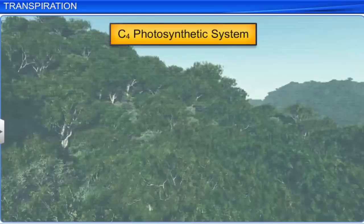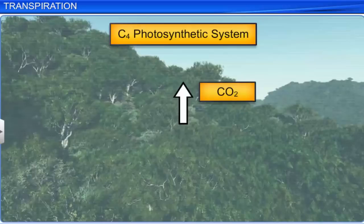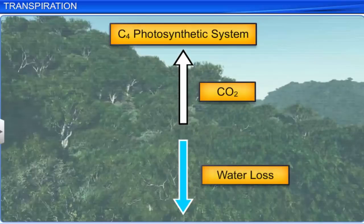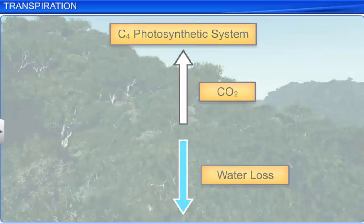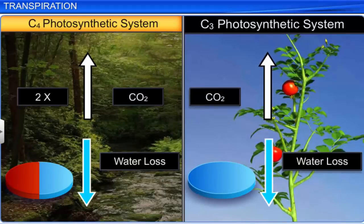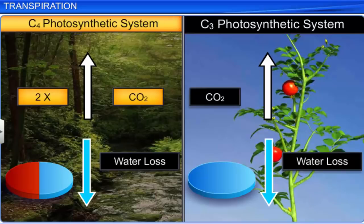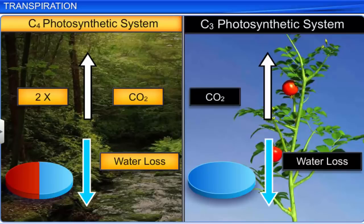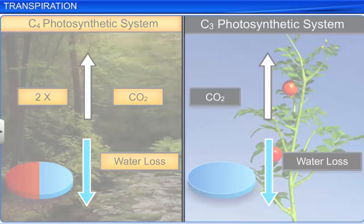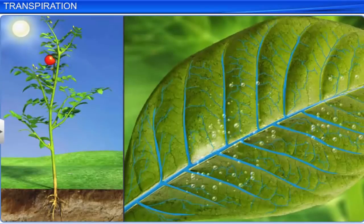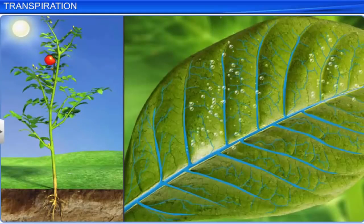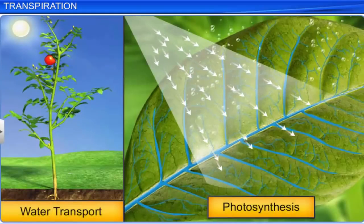The plant C4 photosynthetic system solves this by increasing the availability of carbon dioxide and decreasing water loss. This system is more efficient than the C3 system, since it not only fixes carbon twice as much as a C3 system, but also loses half the amount of water lost by the C3 system while fixing the same amount of carbon dioxide. Therefore, transpiration plays an important role in both water transport and photosynthesis in plants.